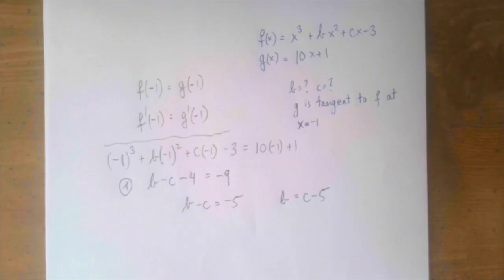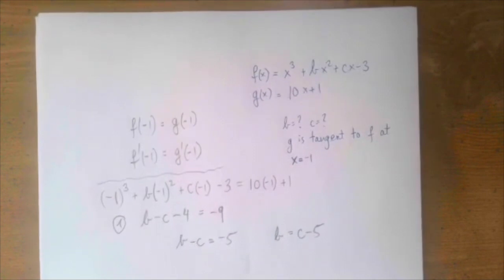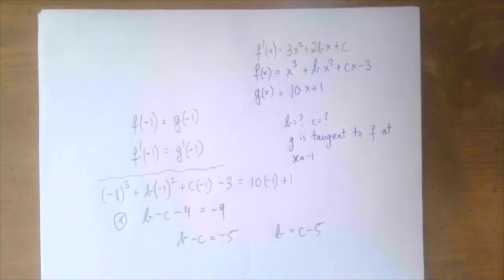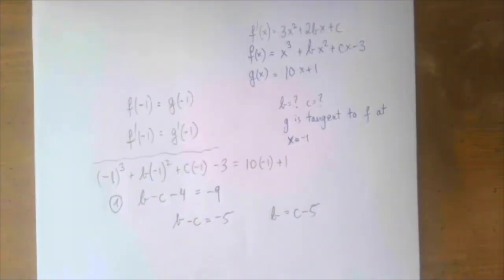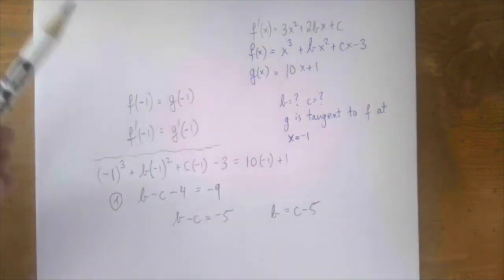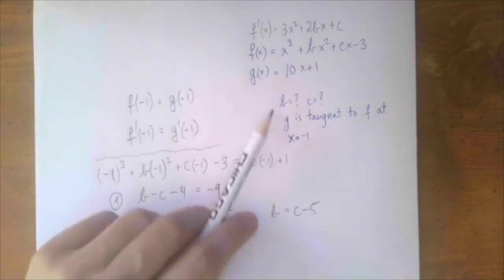For the second equation, the derivative f'(x) = 3x² + 2bx + c. Evaluated at x = -1, this should equal the derivative of the line, which is the slope 10.